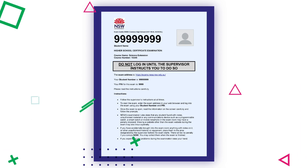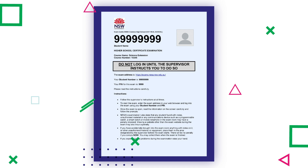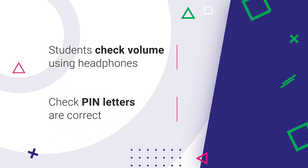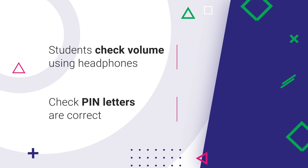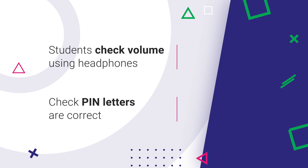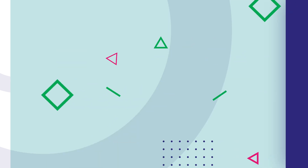Students must have a keyboard, mouse, and wired headphones. While the exam IT coordinator is checking the computers, you can put the pin letters on the desks along with a generic writing booklet. Once the computers are ready and the students are seated, ask them to check the volume on their computer using their headphones, as they cannot do this once the exam starts. Then do a final check to ensure that each student has the correct pin letter — it is very important that a student does not accidentally log in using another student's student number and pin.